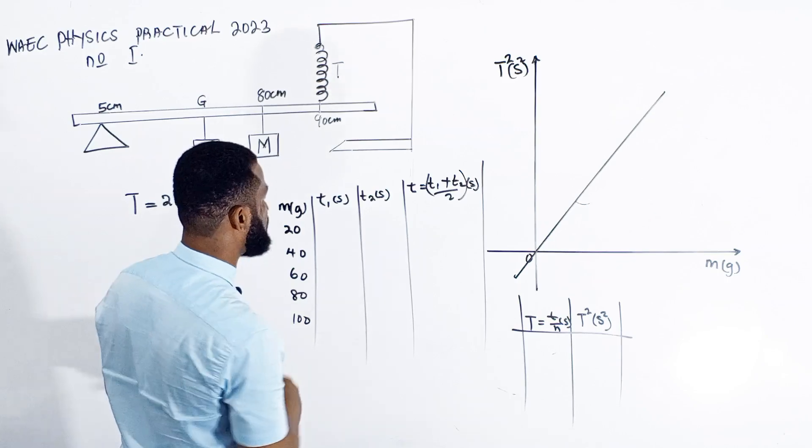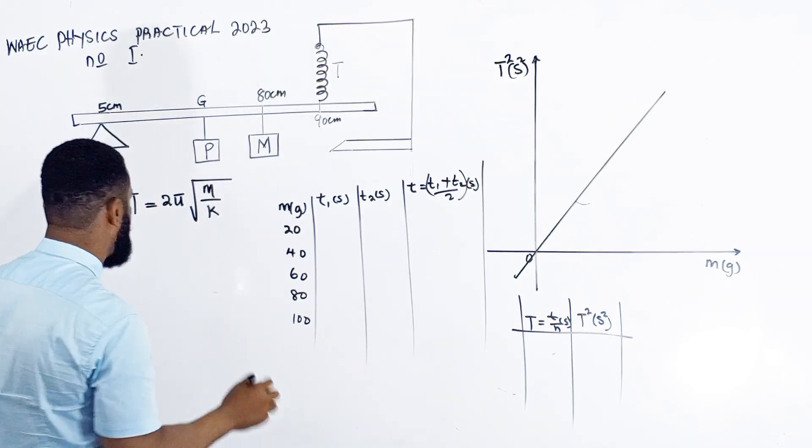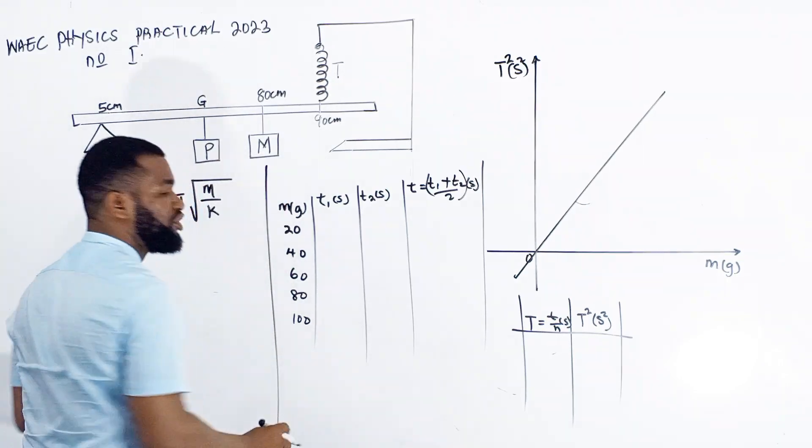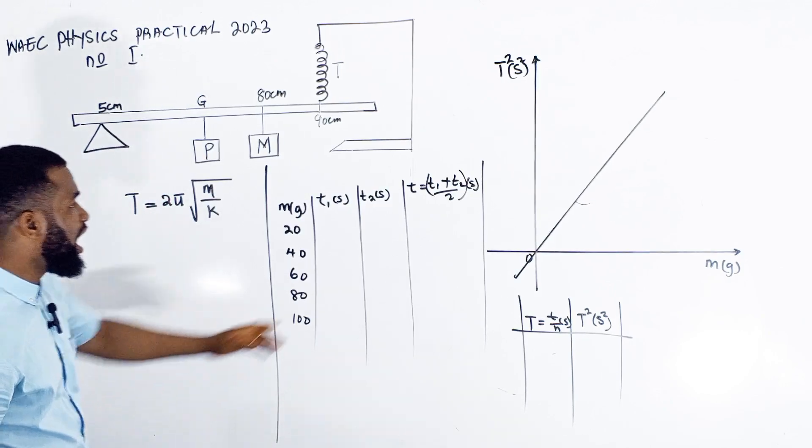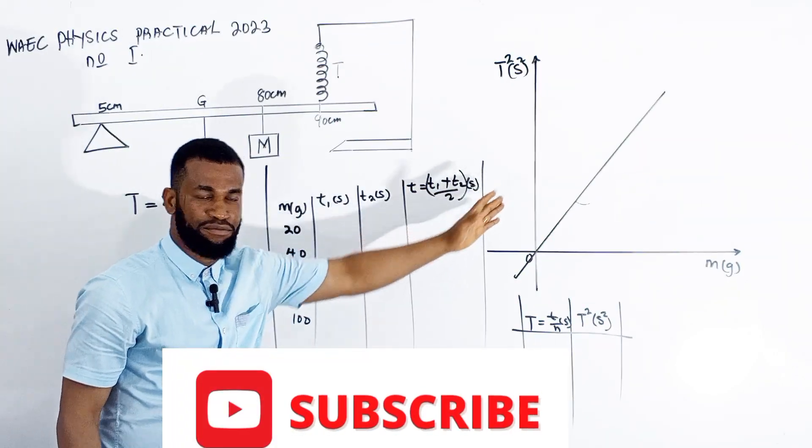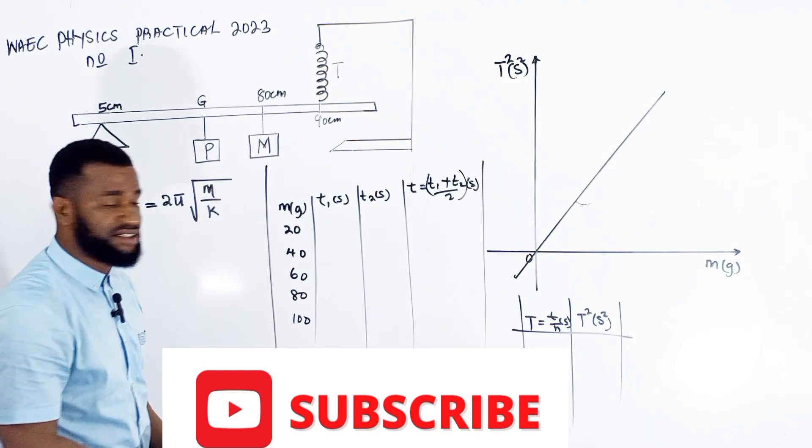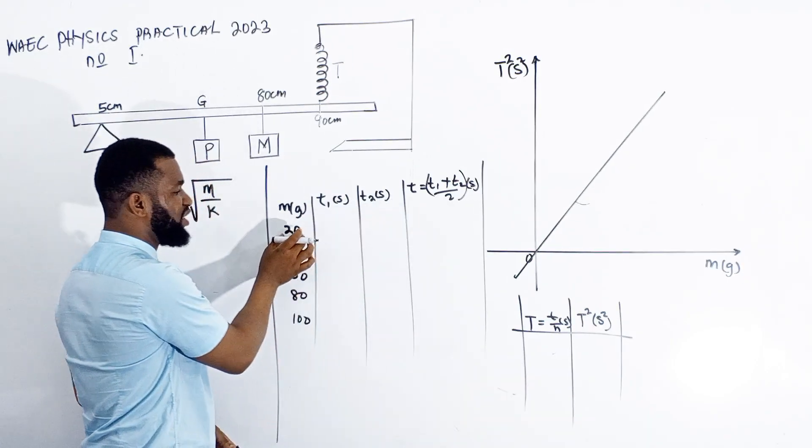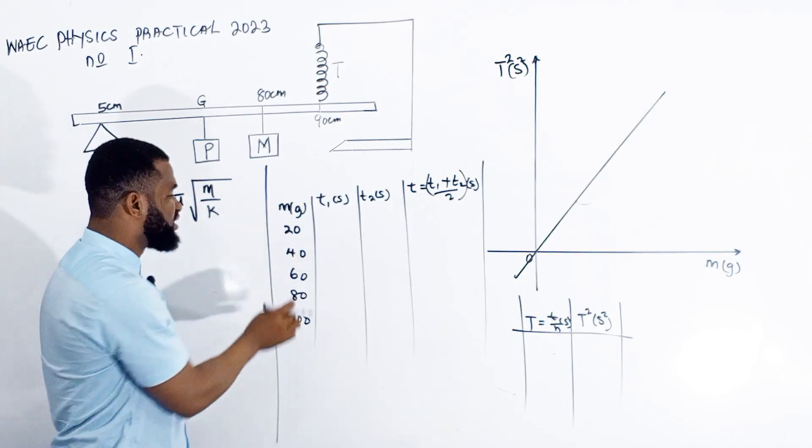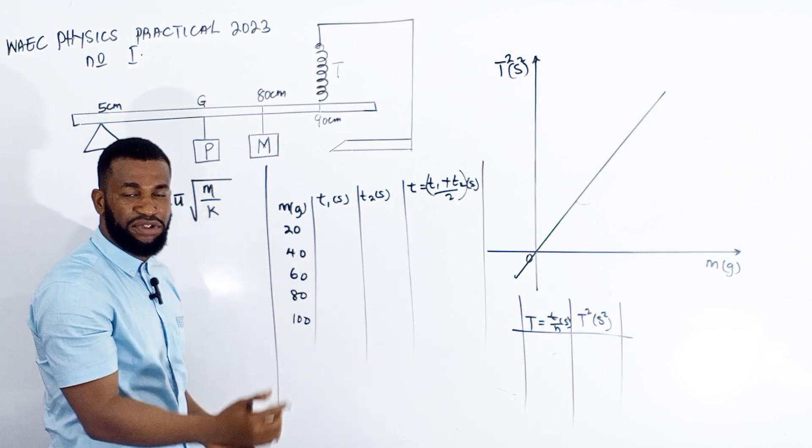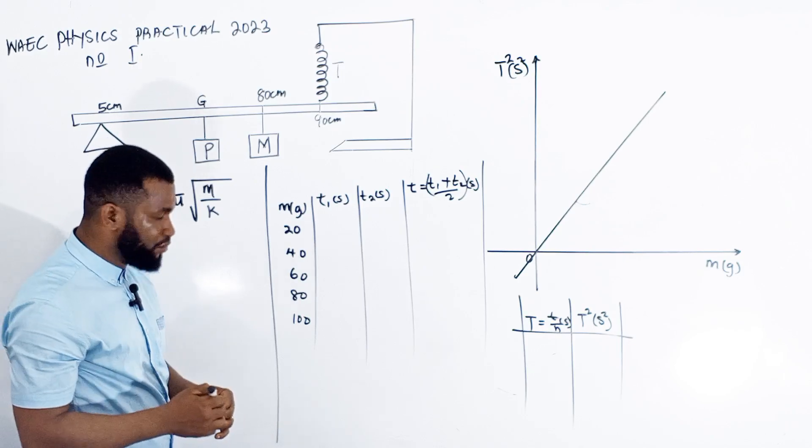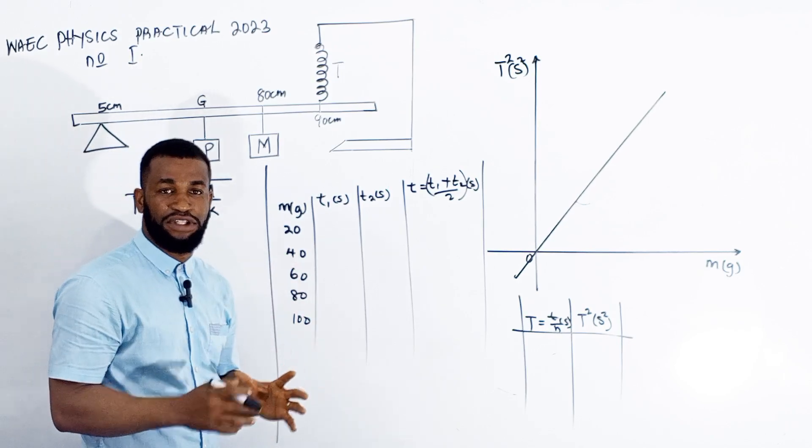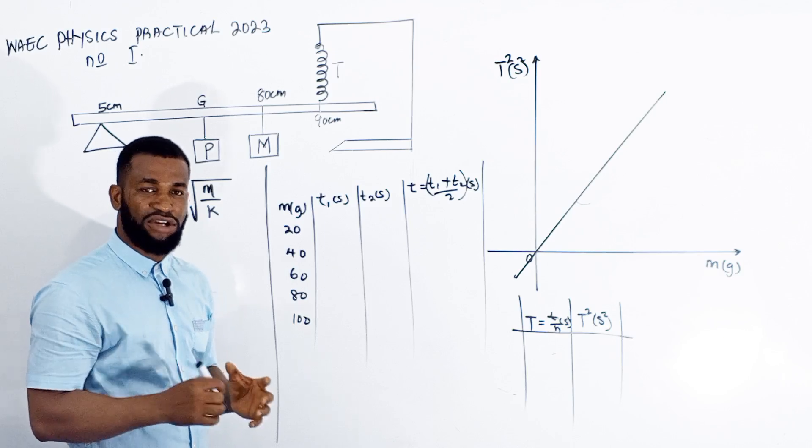Now, what I came here to do is show you the analysis of how the graph will look. What you need to understand is that the time T for 20 grams will not be the same as for 40 grams because the period will be changing.